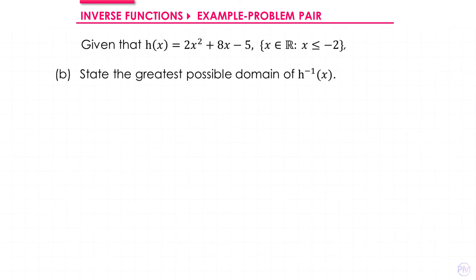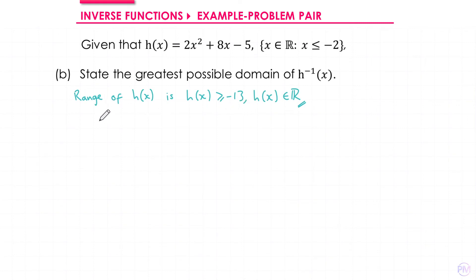In part b we need to state the greatest possible domain of the inverse. The domain of the inverse is the same as the range of the original function, which was h(x) ≥ -13. So the domain of the inverse is x ≥ -13.